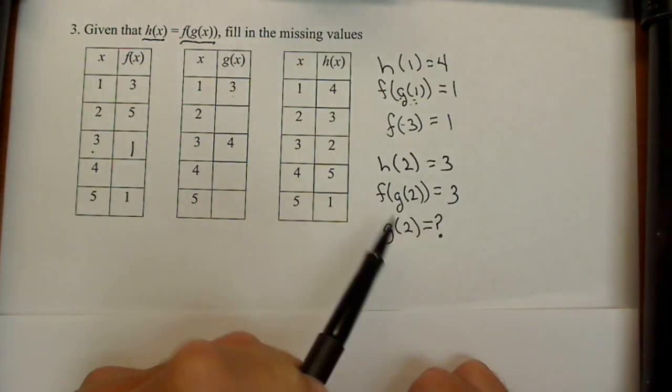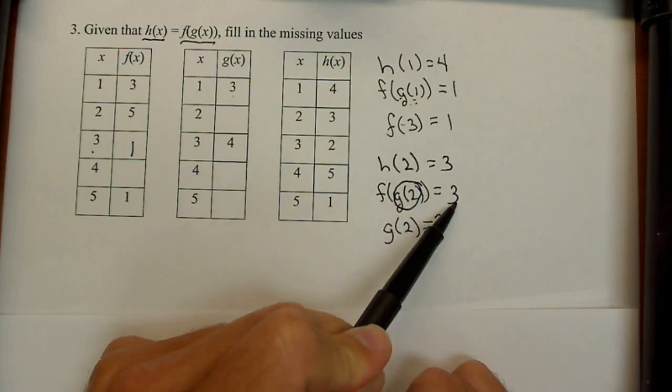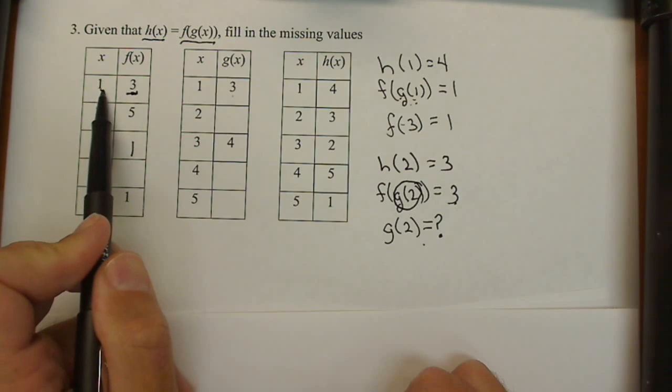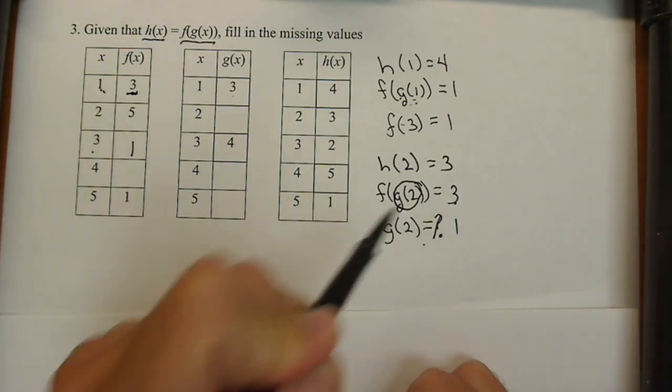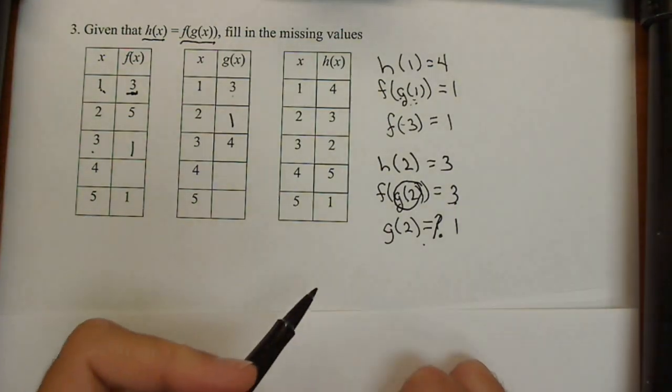Remember what happens: that output of g goes into f and has to give an output of 3. f has an output of 3 when its input is 1, so g(2) has to equal 1. So we're filling in the missing pieces.